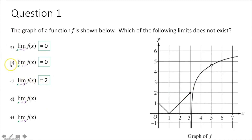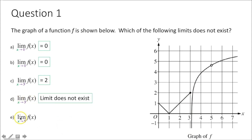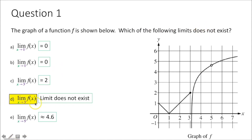Part d tests whether the limits from the left and right as x approaches 3 equal one another. The limit from the left was 2, but the limit as x approaches 3 from the right looks like it's going to be negative infinity. Therefore, the limits are not equal, so the limit as x approaches 3 of f of x does not exist. For part e, the limit as x approaches 5 from the left and from the right both equal approximately 4.6, so the limit exists. The answer to which limit does not exist is d.